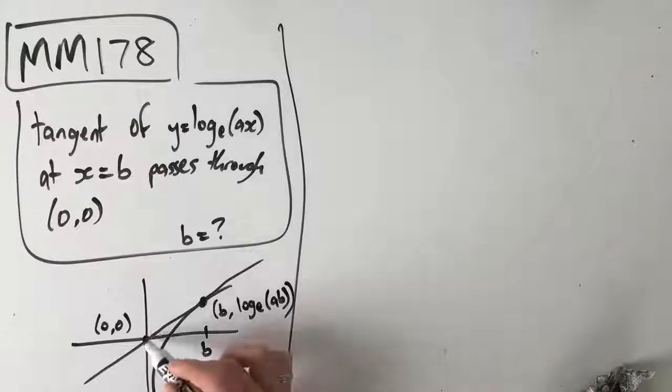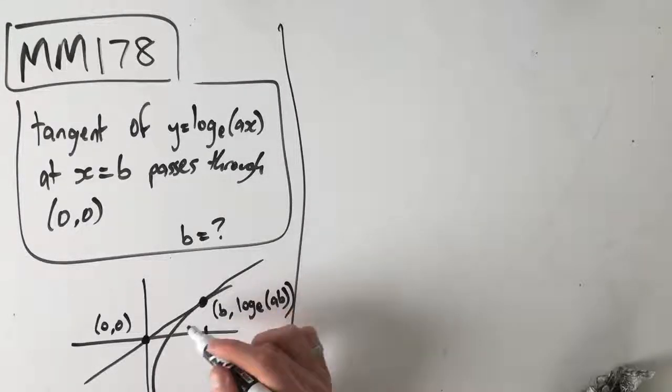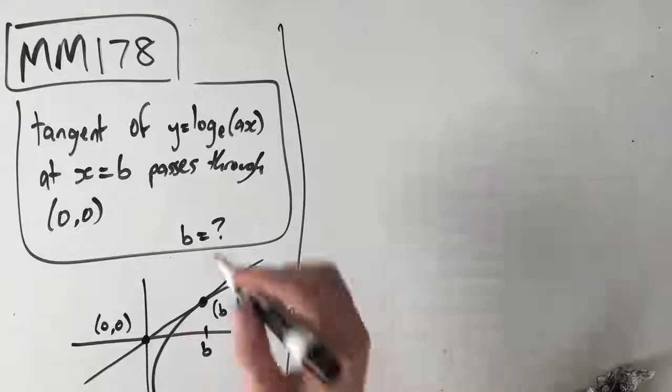If we can equate the gradient of this tangent to the gradient of the graph at this point, we'll be able to work out b. This is just one of those questions that you'll get to know over time. It's not a super intuitive question if you haven't seen one before, so just work with me and you'll get used to these as you go along.